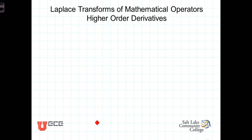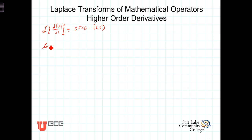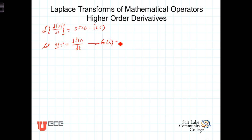We can use the result we just derived to determine the effect of the Laplace transform on higher-order derivatives. The Laplace transform of df(t)/dt equals s times F of s minus f(0 minus). Now let's define g of t to be equal to the derivative of f of t with respect to t. Using this formula, the Laplace transform of g of t — which is G of s — is equal to s F of s minus f(0 minus).